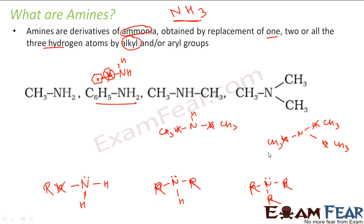So what are amines? Amines are nothing but derivatives of ammonia, and the name amines comes from ammonia itself. Amines are derivatives of ammonia where you replace H with R — you can replace 1H, 2H, or 3H. Amines are obtained by replacement of 1, 2, or all three hydrogen atoms in ammonia with an alkyl or aryl group.